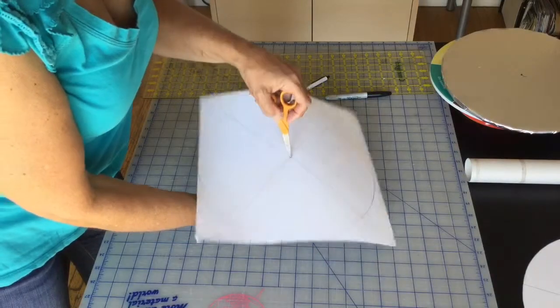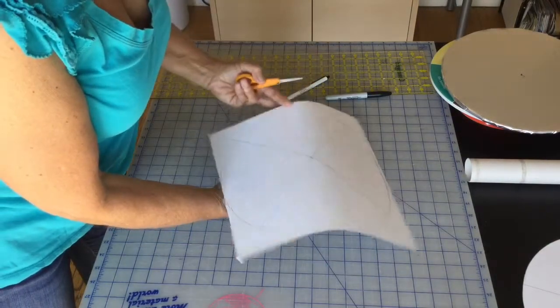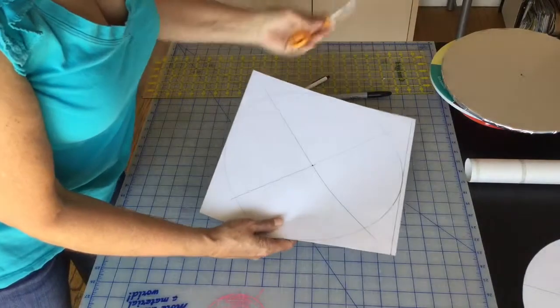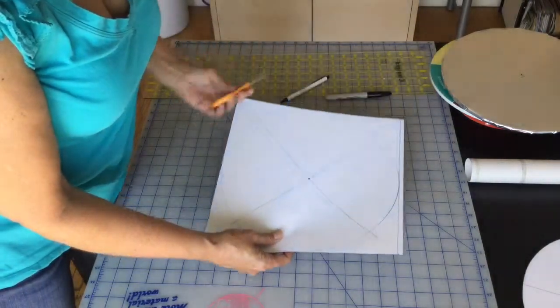You can just pierce the center on your cross section and then you're ready to cut out your circle and you've got your template in the middle of your circle ready for your project.